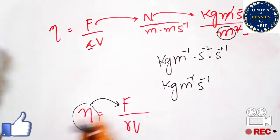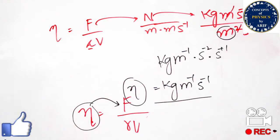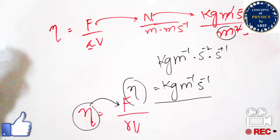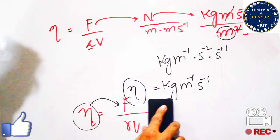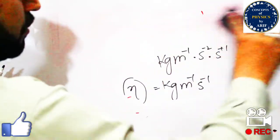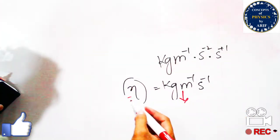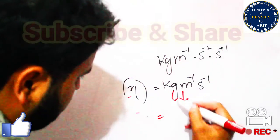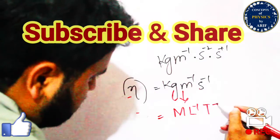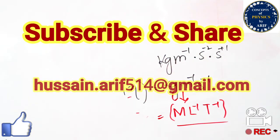The final SI unit for the coefficient of viscosity is kilogram per meter·second. This is frequently asked in exams — students often confuse the unit of viscosity with the unit of coefficient of viscosity, which are two different terms. The dimensional formula is M¹L⁻¹T⁻¹, where mass dimension is M, meter gives L⁻¹, and second gives T⁻¹.